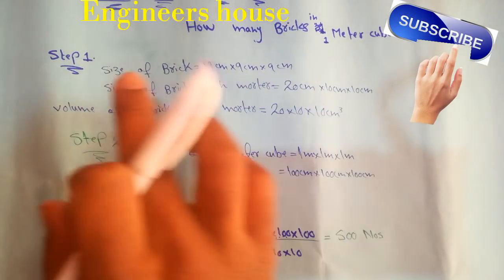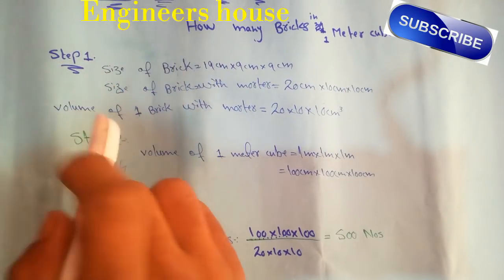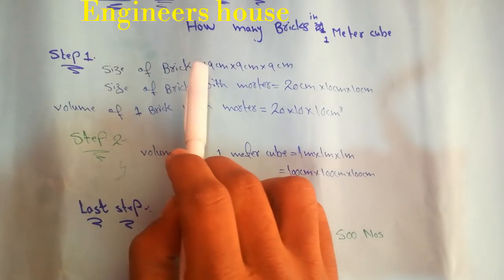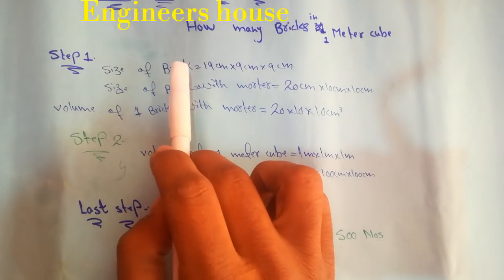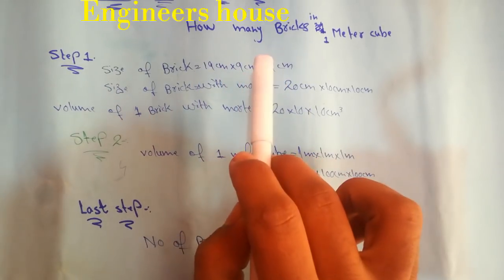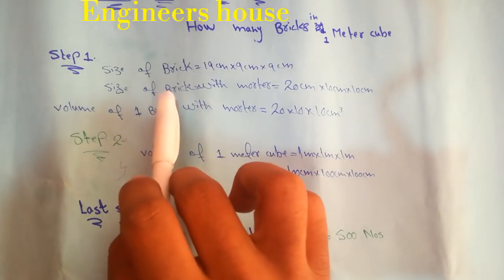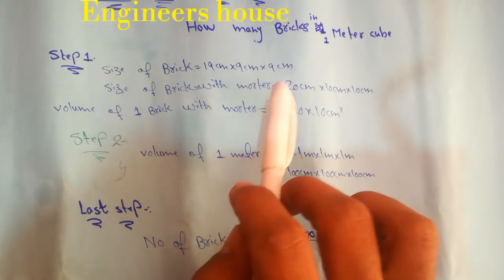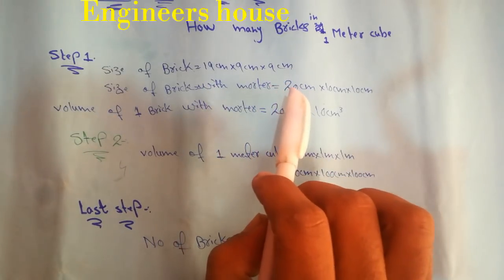Okay, let's start. Step 1: Size of brick is equal to 19 cm by 9 cm by 9 cm. Size of brick with mortar is equal to 20 cm by 10 cm by 10 cm.